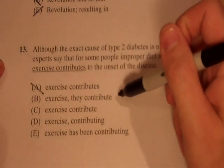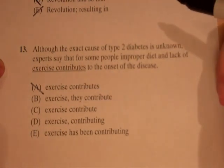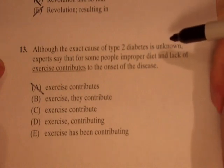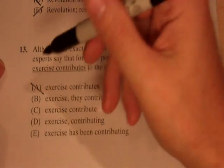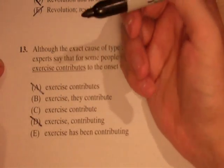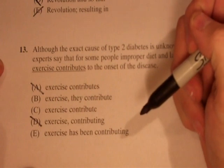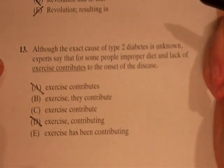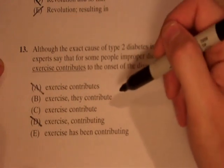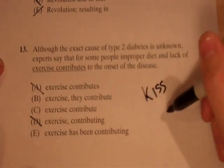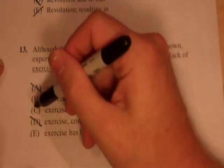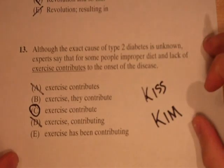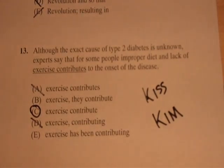One choice using 'contributing' creates a sentence fragment, so I eliminate D. I'm left with B, C, and E, all seeming grammatically okay. I go with the shortest answer that preserves the intended meaning — and in this case it is C. It's a little bit of art and a little bit of science, but if you're left with multiple answer choices that have no grammatical mistakes, go with the most concise, most well-written one.